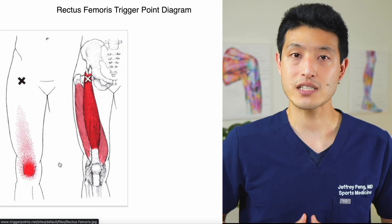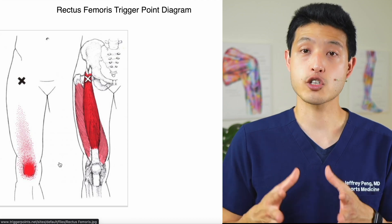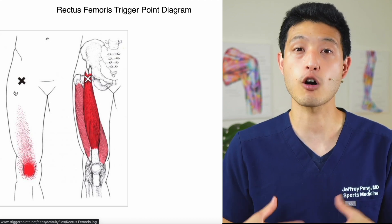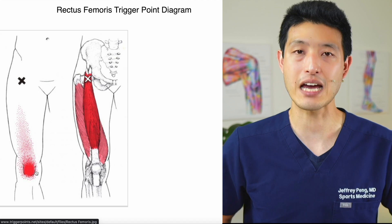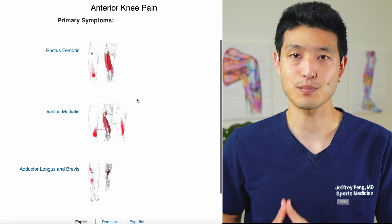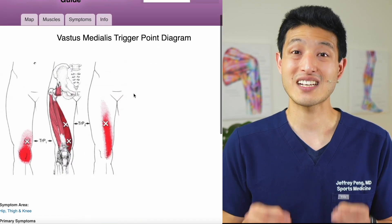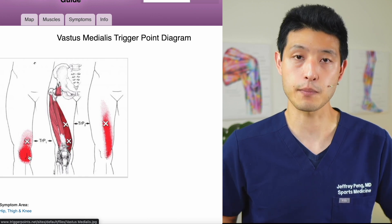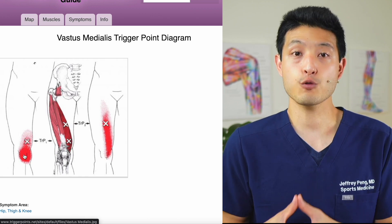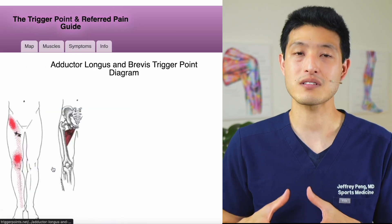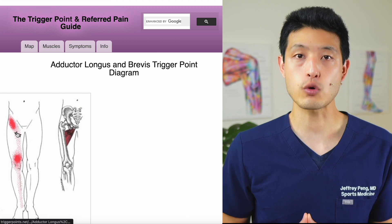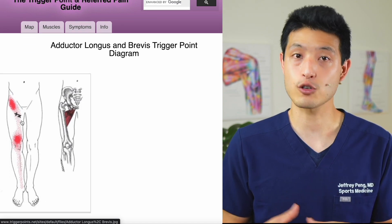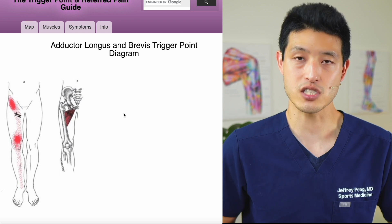Let's take the rectus femoris as an example. The trigger point here is almost near the groin, but it can cause pain all around the kneecap. The same is true for the vastus medialis — the trigger points are located in the inner thigh, but can cause pain all around the kneecap. I would go through each of these muscles and press where the X's are located. If there is a tender spot there, then chances are you have a trigger point in that location.